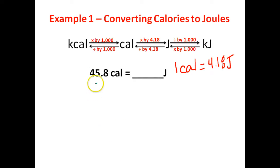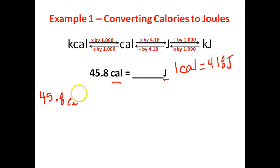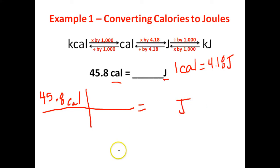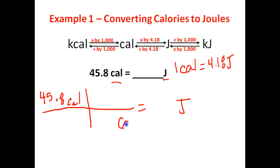So in this problem here, we've got 45.8 calories and we want to know how many joules this is. So let's go ahead and set this problem up. We are starting off with 45.8 calories and we are being asked to figure out how many joules of energy this is. Now, we have the unit calorie on top right here. We want to cancel out this unit of calorie. So in our equivalent statement in the next step, we are going to put calories at the bottom so that they can cancel out.